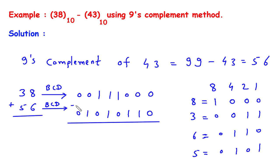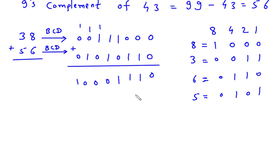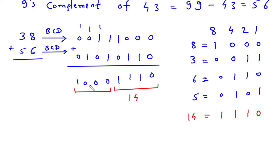Now we add the two BCD values bit by bit: 0 plus 0 is 0, 0 plus 1 is 1, 1 plus 1 is 1, 1 plus 1 is 0 carry 1, 1 plus 1 is 0 carry 1, and so on. Grouping into sets of 4 and checking validity: the second group is 1110, which equals 8 plus 4 plus 2 = 14, which is greater than 9, so it is not valid BCD. The first group is 1000, which is 8, and that is a valid BCD.